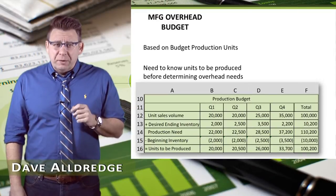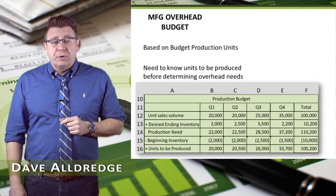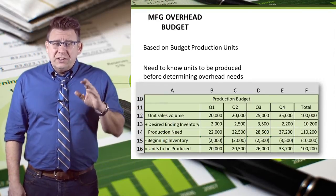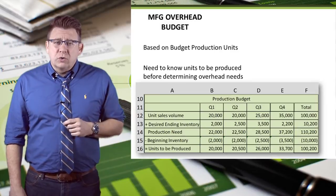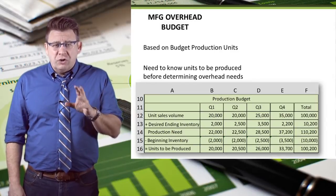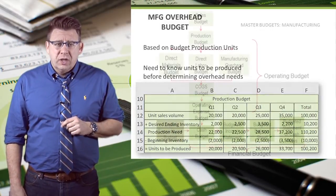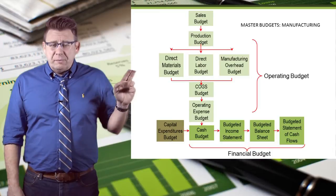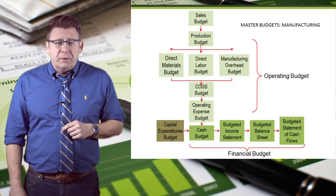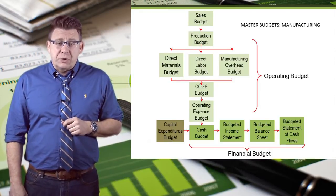The Manufacturing Overhead budget is based on data from the production budget. We need to know how many units we're going to produce before we'll know how much overhead that will incur. You can see that the Manufacturing Overhead budget is the fifth budget completed in the master budget process.